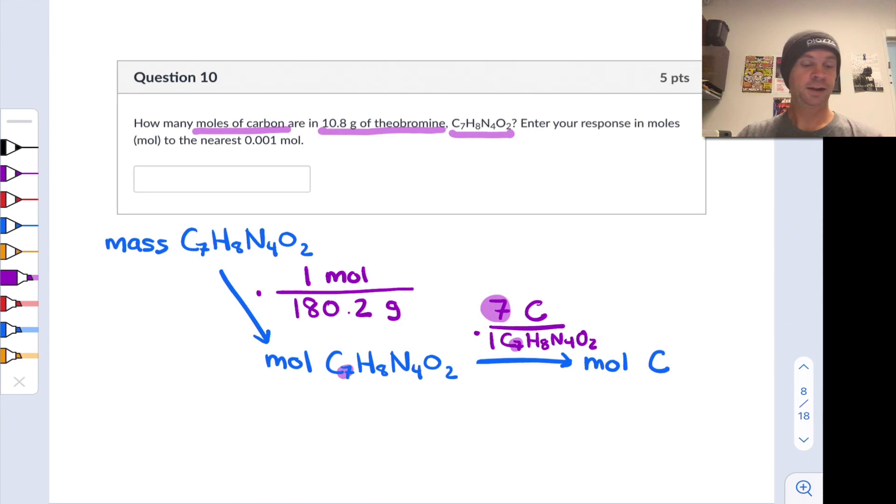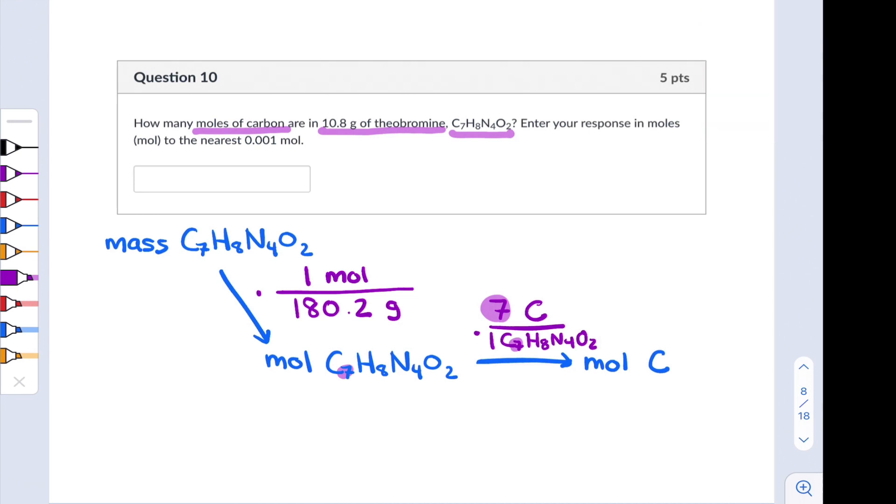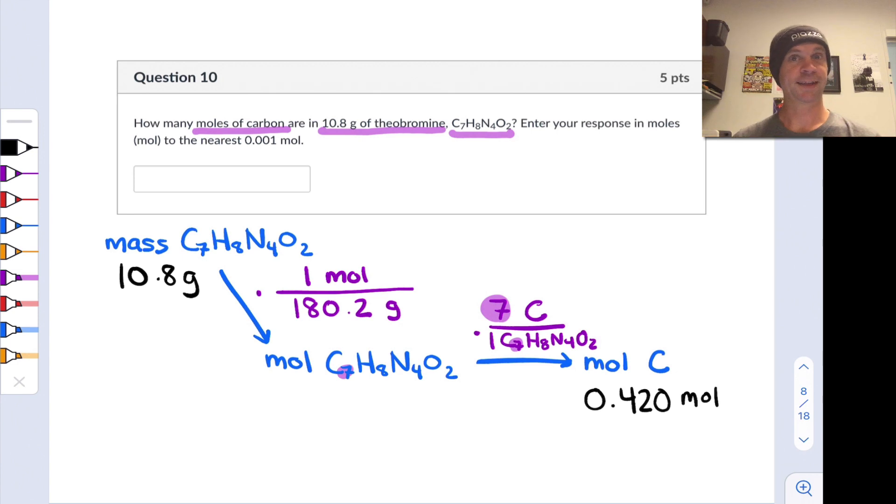And that'll get us to the moles of carbon. So now, all we really need to do is plug things in. We're gonna start with the 10.8 grams that are given. We're gonna divide by 180.2, and we're gonna multiply by seven and see what we get. After multiplying everything out, I end up with a number of moles equal to 0.420 moles of carbon, and there you have it.